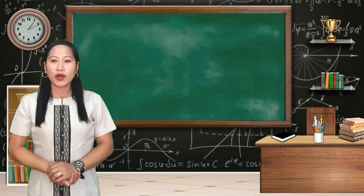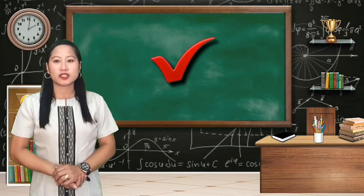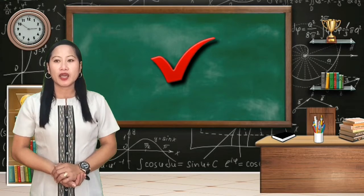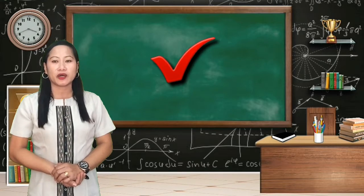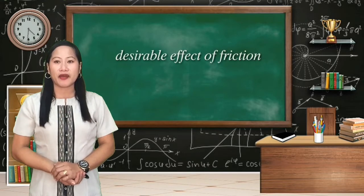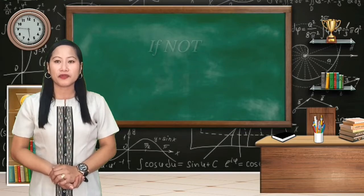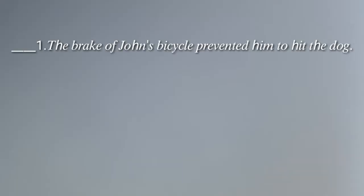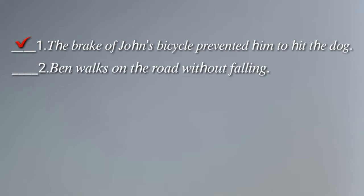Now I want you to put a check mark on the space before the number if the statement or situation shows desirable effect of friction and cross mark if not. Number one: The brake of John's bicycle prevented him to hit the dog. Number two: Ben walks on the road without falling.